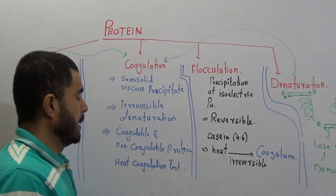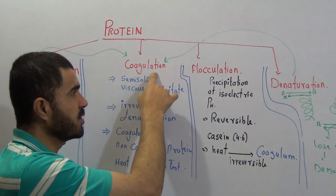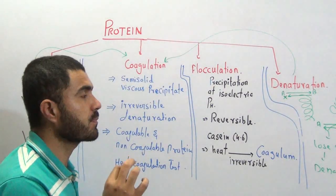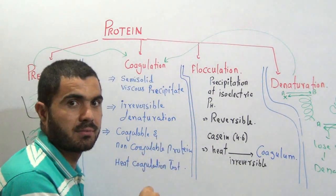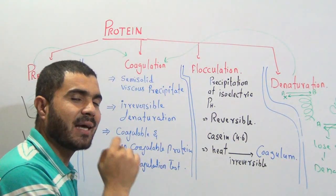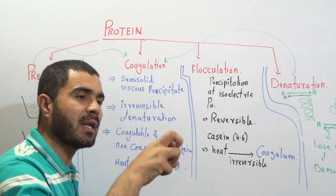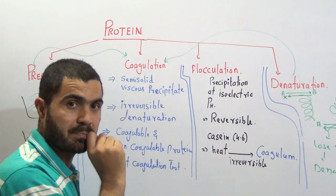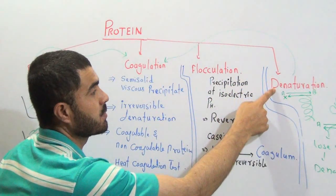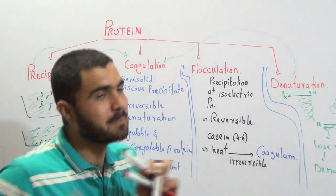An important question: can all proteins be coagulated? The answer is — all proteins can be denatured, but not all proteins can be coagulated. Some proteins can be coagulated, so we use the term coagulable protein. All coagulated proteins can be called denatured, but all denatured proteins cannot be called coagulated.